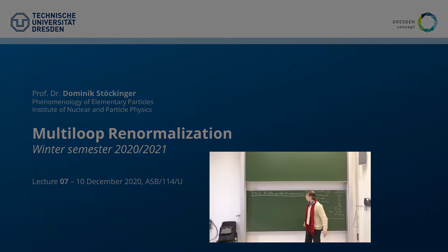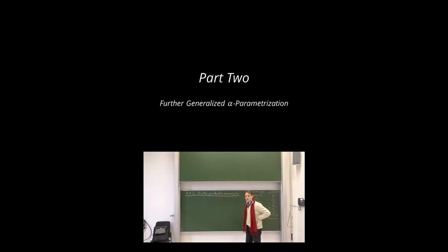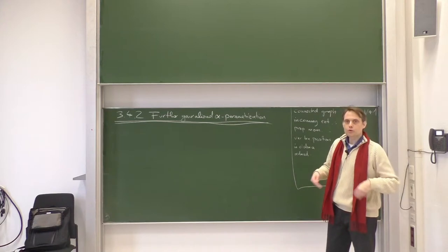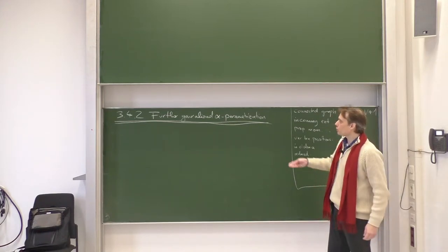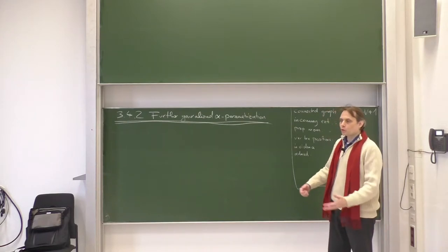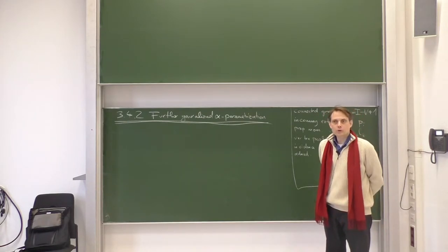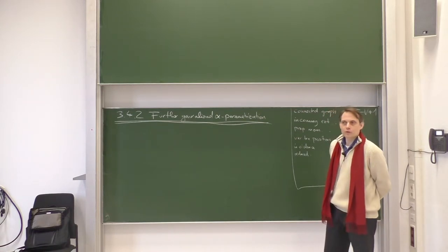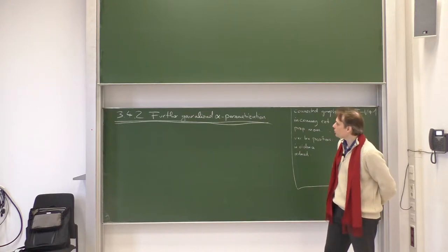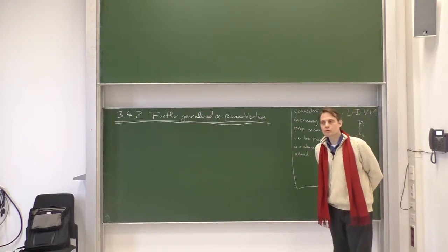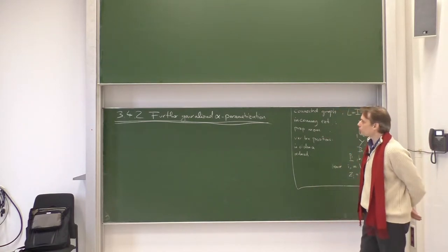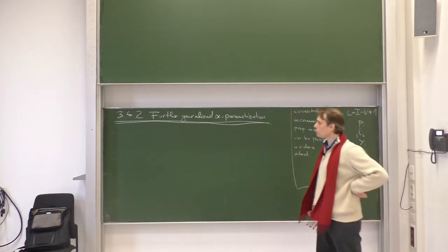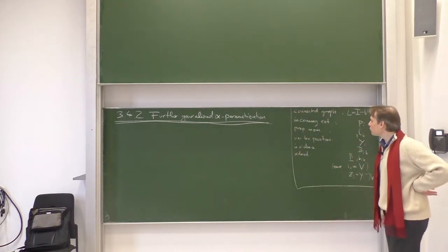The next detail we want to discuss is a further generalized alpha parametrization. We already saw in the last lecture that we need a new formalism to treat numerators, because in general, numerators appear not only in theories like QED, where we have Q-slash and P-slash in propagator numerators, or other theories where the vertex factors are momentum dependent. Even in scalar theories, the counterterms can become momentum dependent because of quadratic divergencies. So we need to be able to treat numerators also in our alpha parametrization, and today we will develop the formalism for that.